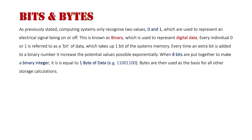which is used to represent digital data, the thing we're studying right now as part of information systems. Every individual zero or one is referred to as a bit of data, which takes up one bit of the system's memory.